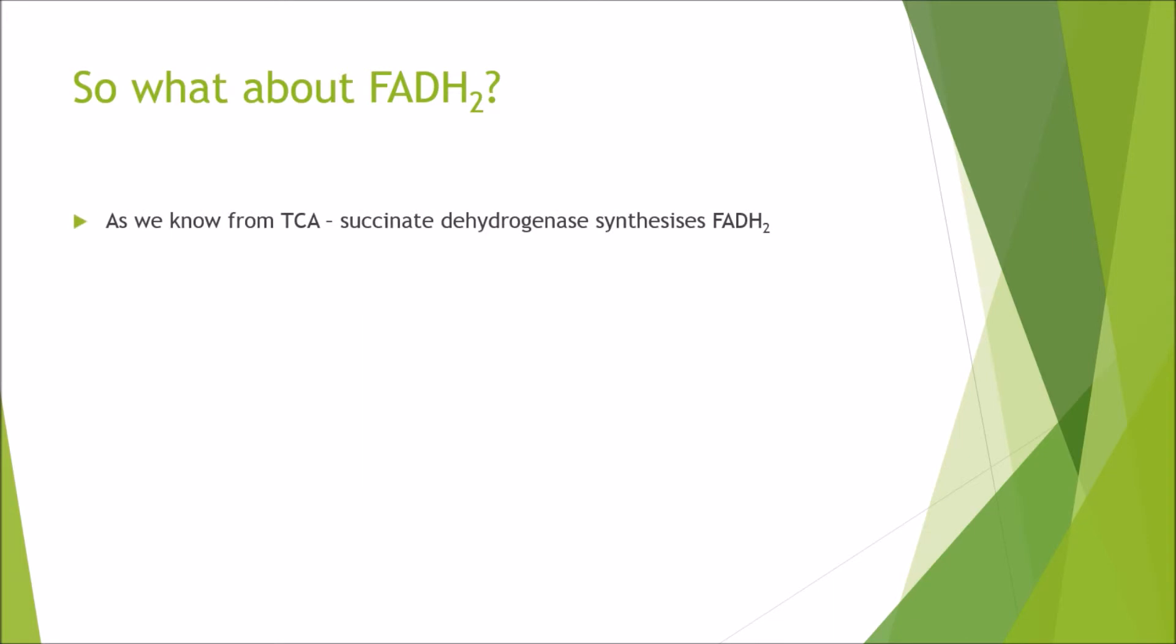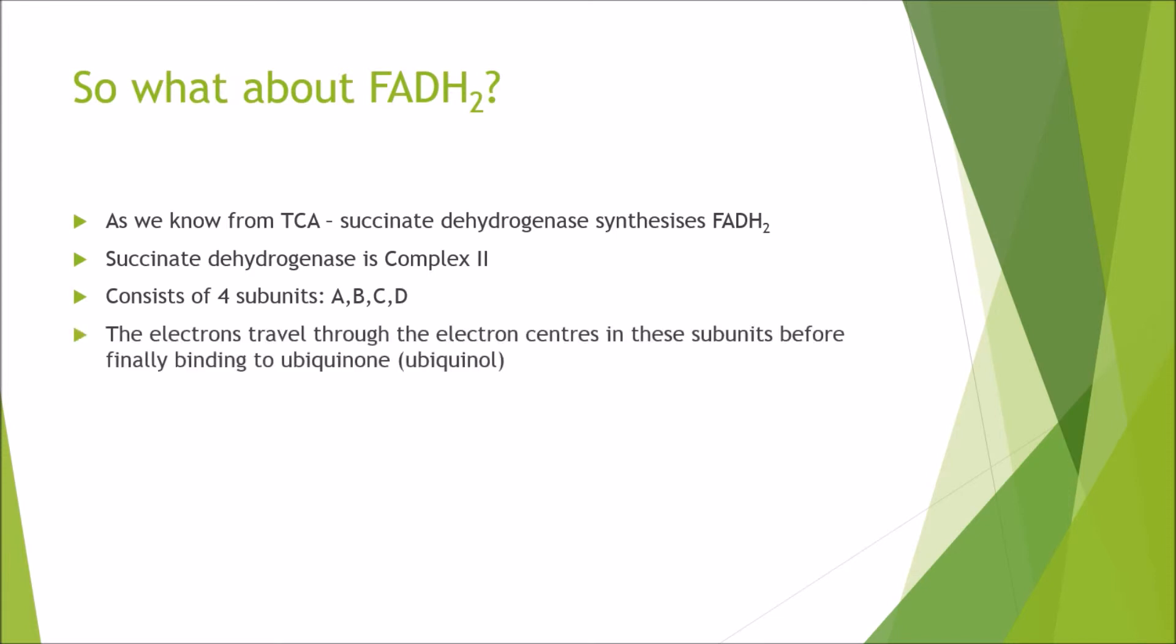As you know from the TCA, succinate dehydrogenase synthesizes FADH2. And also, as I've just told you, succinate dehydrogenase is complex 2 in the electron transport chain. This consists of four subunits: A, B, C and D. Pretty straightforward. The electrons travel through the electron centers in these subunits before finally binding to ubiquinone, which then gets reduced to ubiquinol.